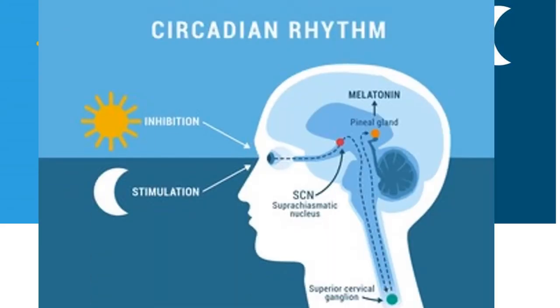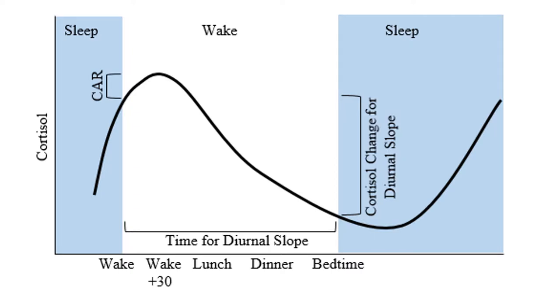Our circadian rhythm is entrained with the sunlight and darkness cycles, and it is located in the suprachiasmatic nucleus in the hypothalamus. It sends signals for secretion of melatonin from the pineal gland. On awakening, there is a spike of cortisol — also called the stress hormone — and when we fall asleep, there is the lowest level of cortisol.